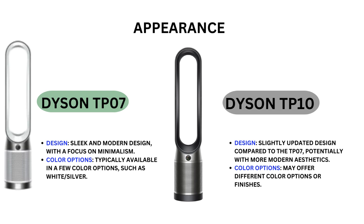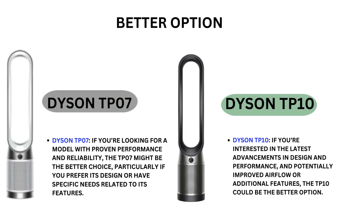Color options may offer different color options or finishes. Better option — Dyson TP-07: if you are looking for a model with proven performance and reliability, the TP-07 might be the better choice, particularly if you prefer its design or have specific needs related to its features. Dyson TP-10: if you are interested in the latest advancements in design and performance and potentially improved airflow or additional features, the TP-10 could be the better choice.